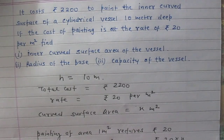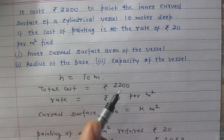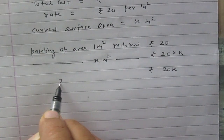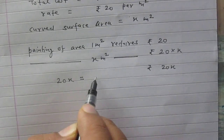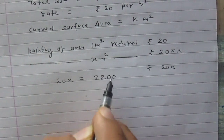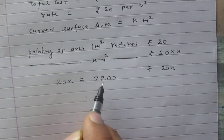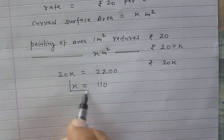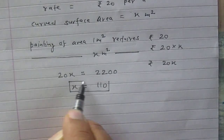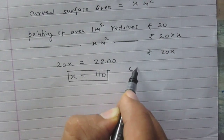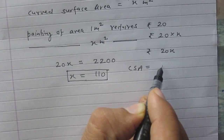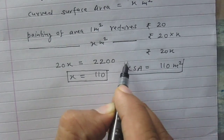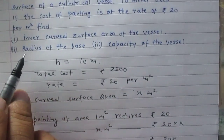According to the question, the total cost is rupees 2200. Combining these two facts, we can say that rupees 2200 is equal to rupees 20X. This gives us the linear equation: 20X = 2200. After solving, we get X = 110. So the curved surface area of this cylindrical vessel is 110 meter square. The first part is complete.